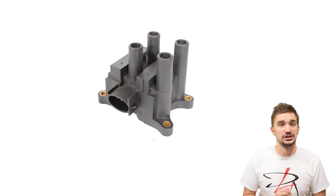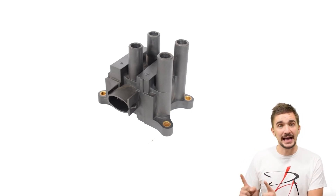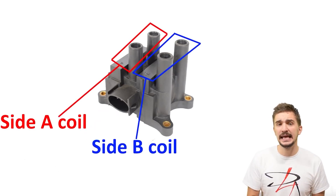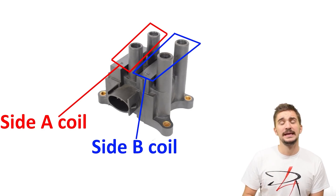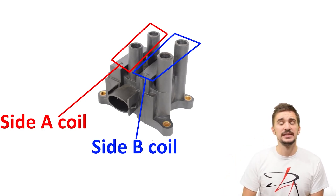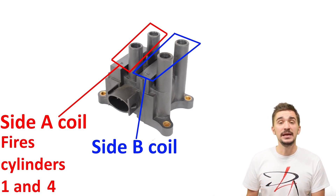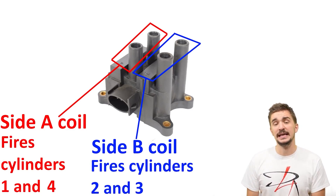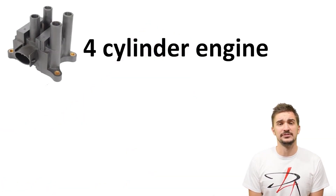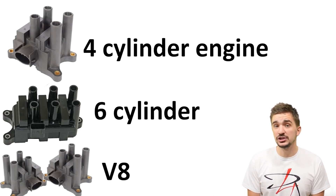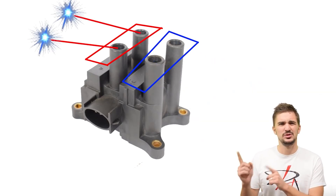Although much smaller and more compact than a single-coil distributor-based system, the coil pack actually has two ignition coils inside it. We can divide the coil pack into side A and side B. One ignition coil in a coil pack always fires two cylinders at the same time. In a four-cylinder engine, side A fires cylinders one and four, and side B fires cylinders two and three. For a six-cylinder engine you need a larger coil pack, and for a V8 you need two coil packs with a total of four ignition coils, so each ignition coil handles two cylinders.